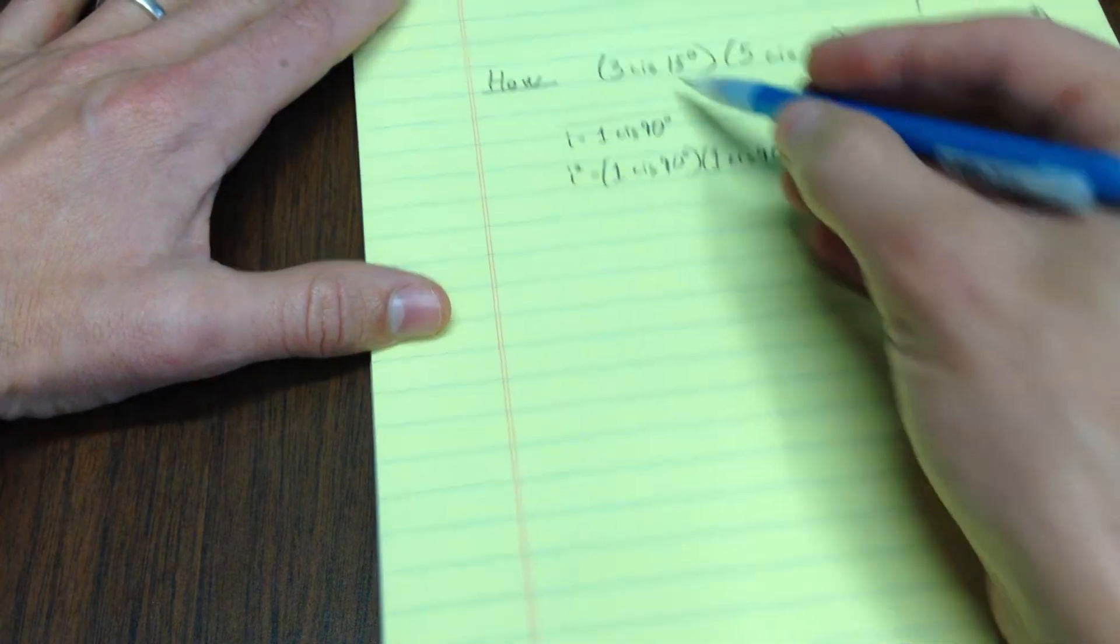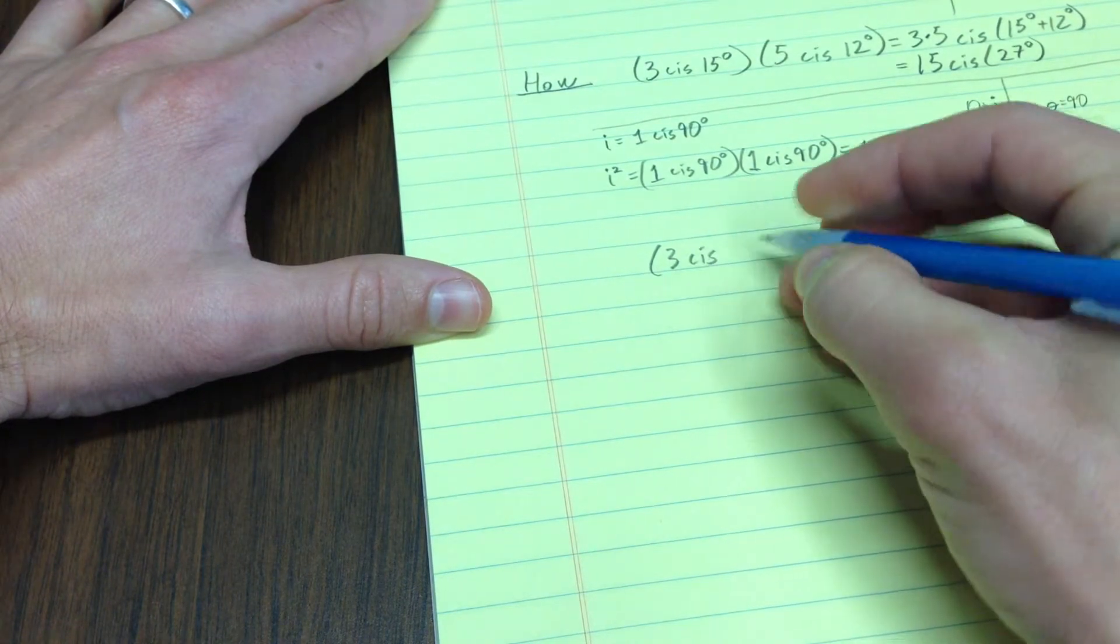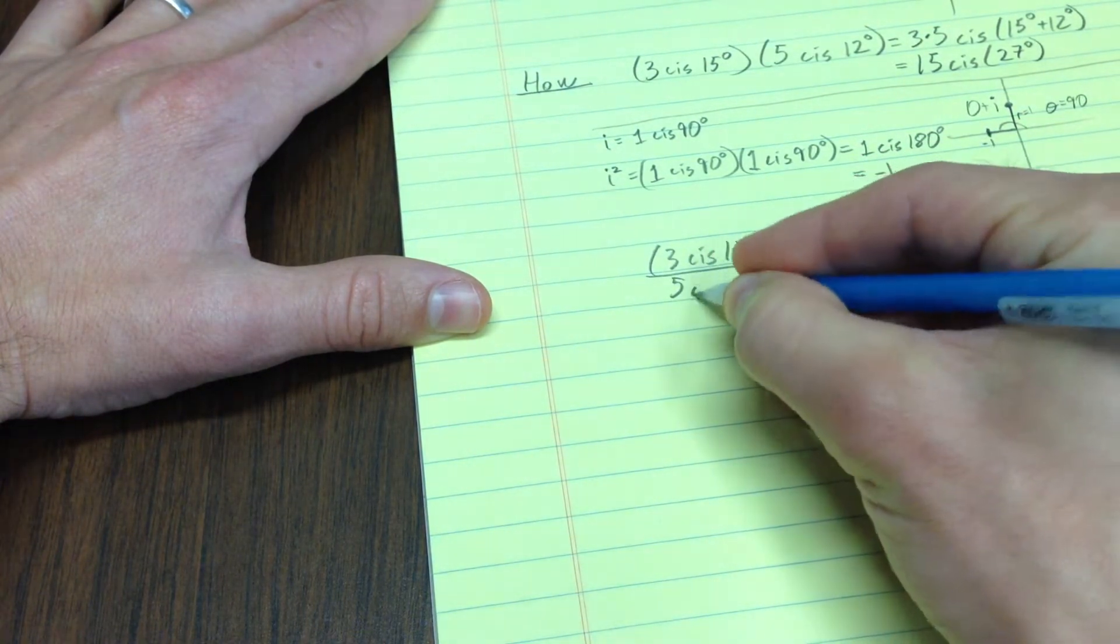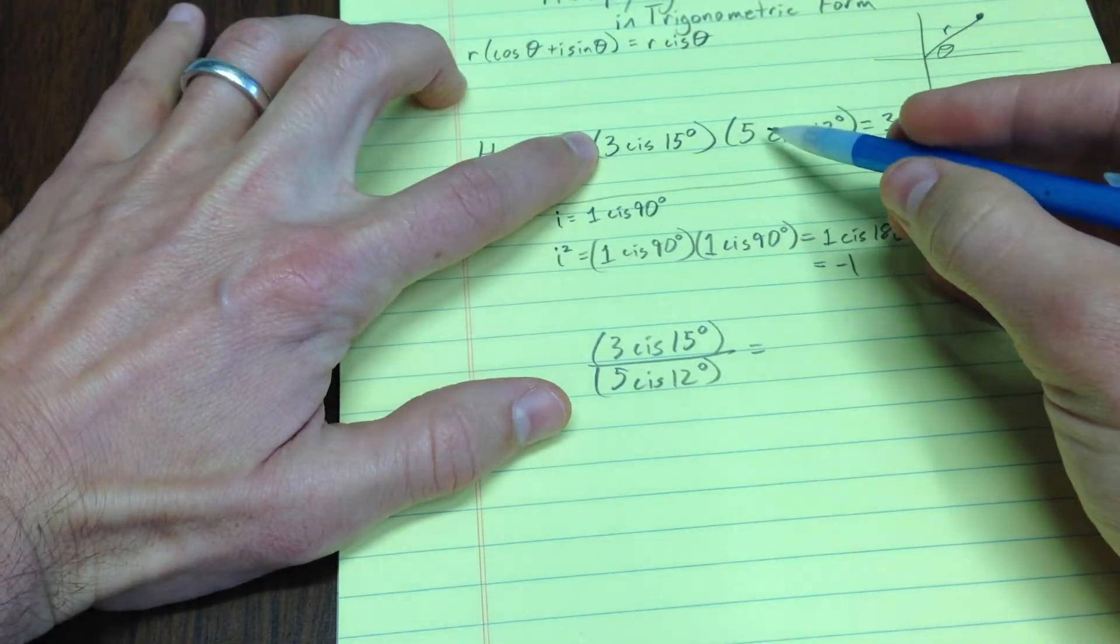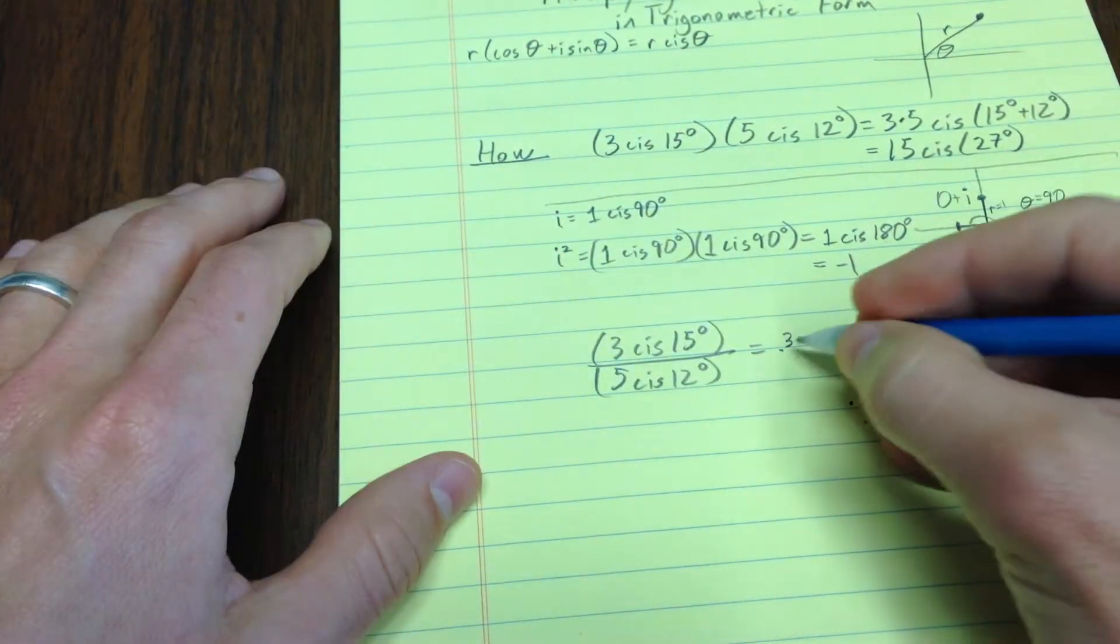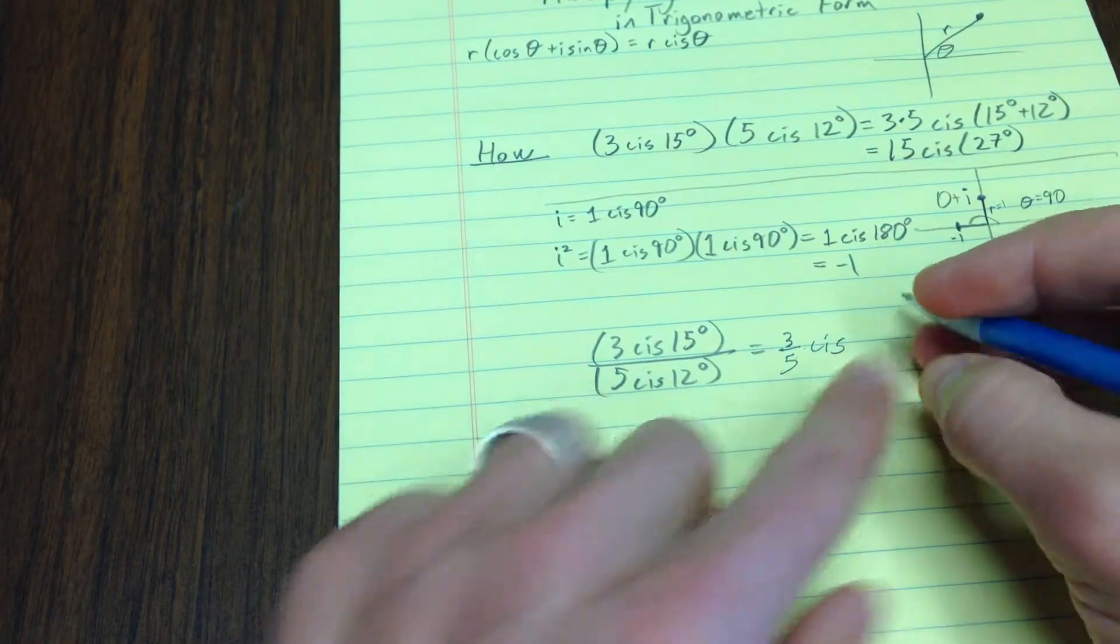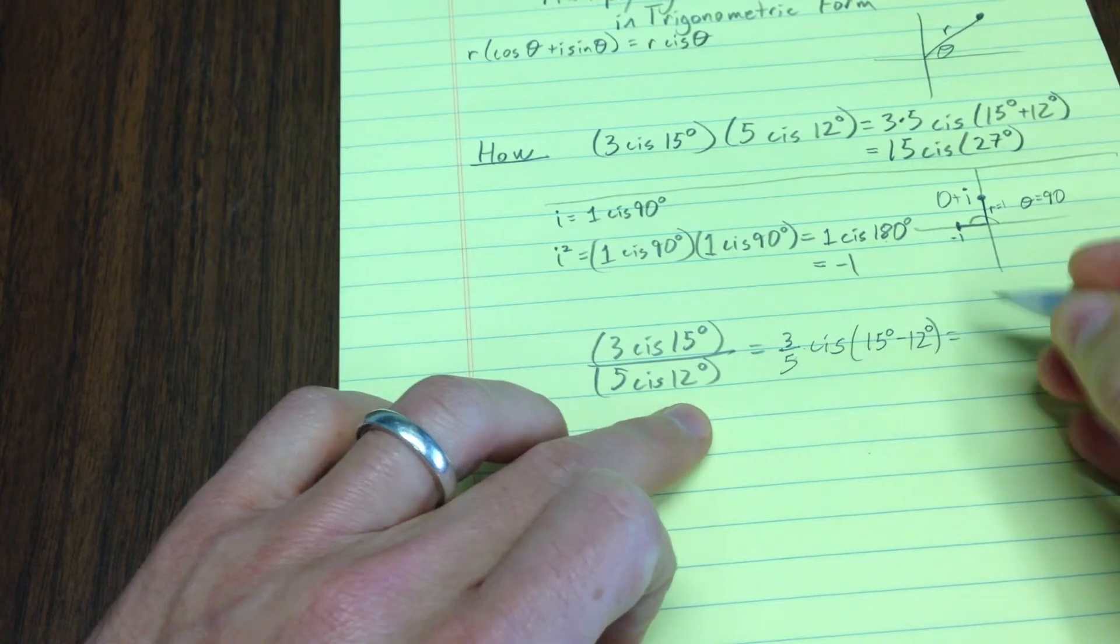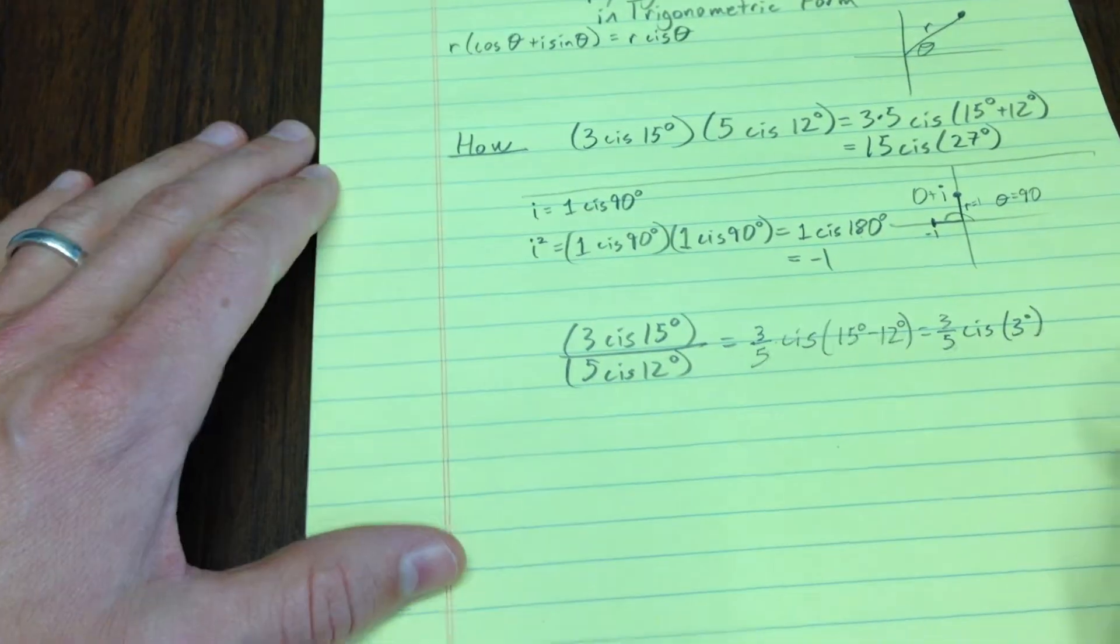Hopefully you can do this functionally. How do you divide 3 cis 15 degrees divided by 5 cis 12 degrees? You can imagine, here you multiply the magnitudes, here you're going to divide the magnitudes, so it's 3 fifths cis, and now instead of adding these, you're going to subtract these, it's going to be 15 degrees minus 12 degrees, which is 3 fifths cis 3 degrees. It always works just like that.